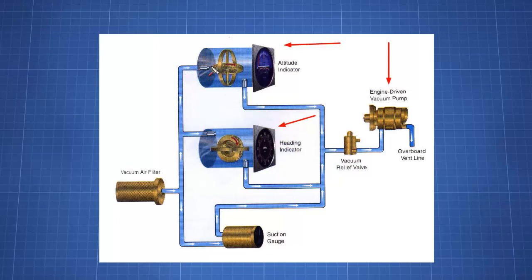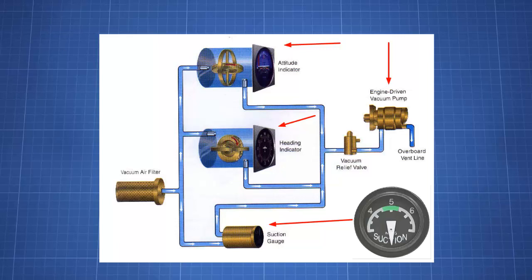You can see through this plumbing here it is pulling air through the system through our vacuum air filter up through the lines, the back of the gauges. These gyros themselves have little vanes on them which is what the air is pulling over, causing it to spin in the different axis that it's mounted in, and then back through the plumbing and overboard. The vacuum relief valve just prevents too much pressure from being built up and then we have our suction gauge inside the cockpit to make sure we have the appropriate amount of suction. This draws air through the system and can spin the gyros up to 18,000 rpm.